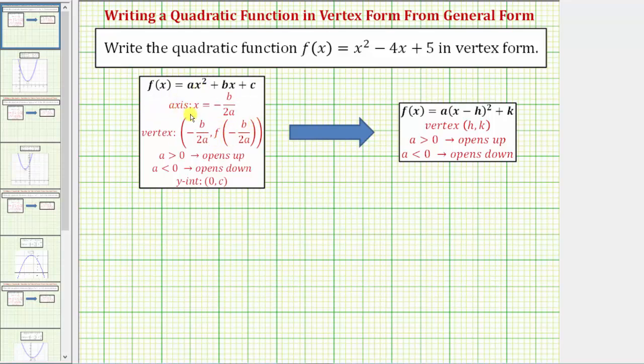The equation of the axis of symmetry is x equals negative b divided by two a, and therefore the x-coordinate of the vertex is also negative b divided by two a, and the y-coordinate would be the function value at x equals negative b divided by two a.